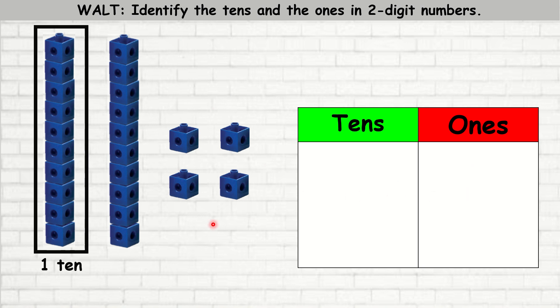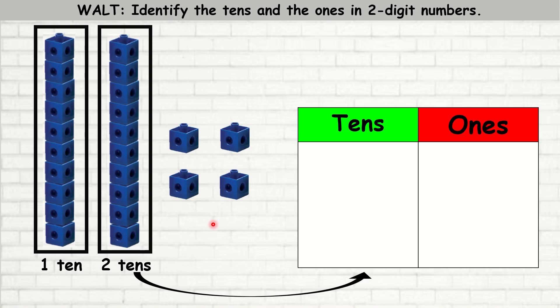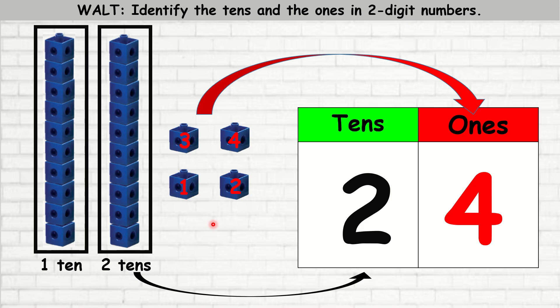So we're going to start with the tens. I can see that I have two tens and four ones. So two tens and four ones is 24.